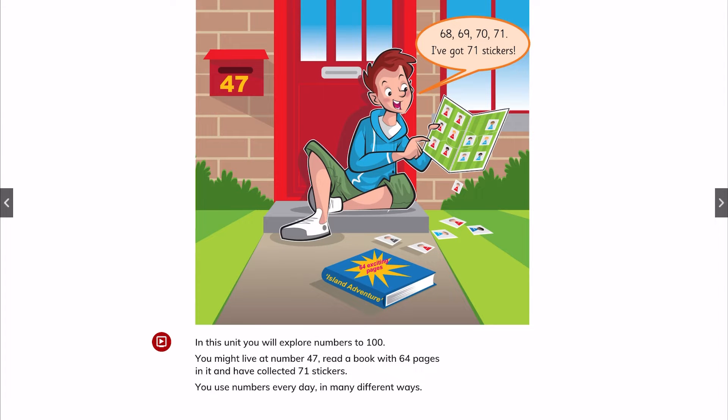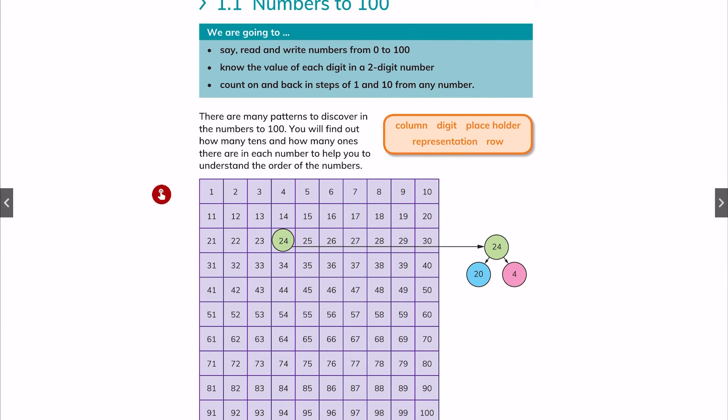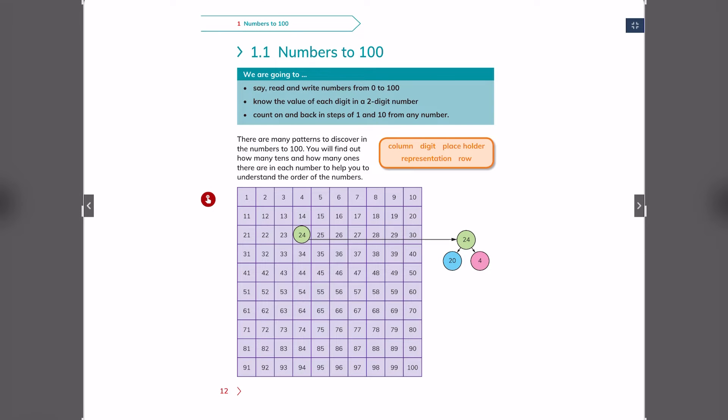This is a quick exercise to get started. Let's go to the next page, which is the start of our section, section 1.1, which is numbers to 100. In this section, we will talk about the numbers from 0 to 100. The most important part on this page is there are some key words that you have to learn throughout this section. The first one is column, the second one is digit, the third one is placeholder, the fourth one is representation, and the last one is row. Now, let's look at these numbers. It starts from one and ends with 100.